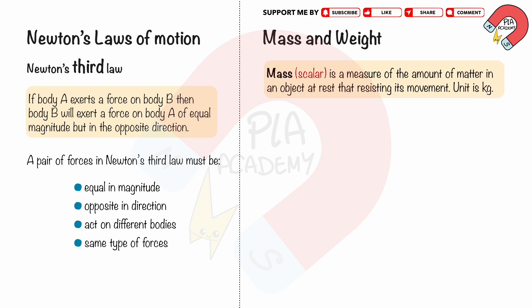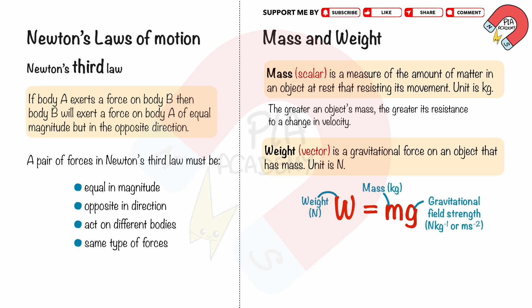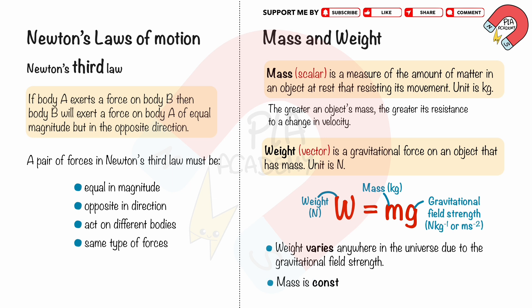Mass is a measure of the amount of matter in an object at rest that resists its movement. Mass is a scalar quantity and its unit is kilograms — the greater an object's mass, the greater its resistance to a change in velocity. Weight is a gravitational force on an object that has mass. Weight is a vector quantity and its unit is newtons. We calculate weight using the equation W = mg. Weight varies anywhere in the universe due to gravitational field strength, while mass is constant anywhere in the universe.